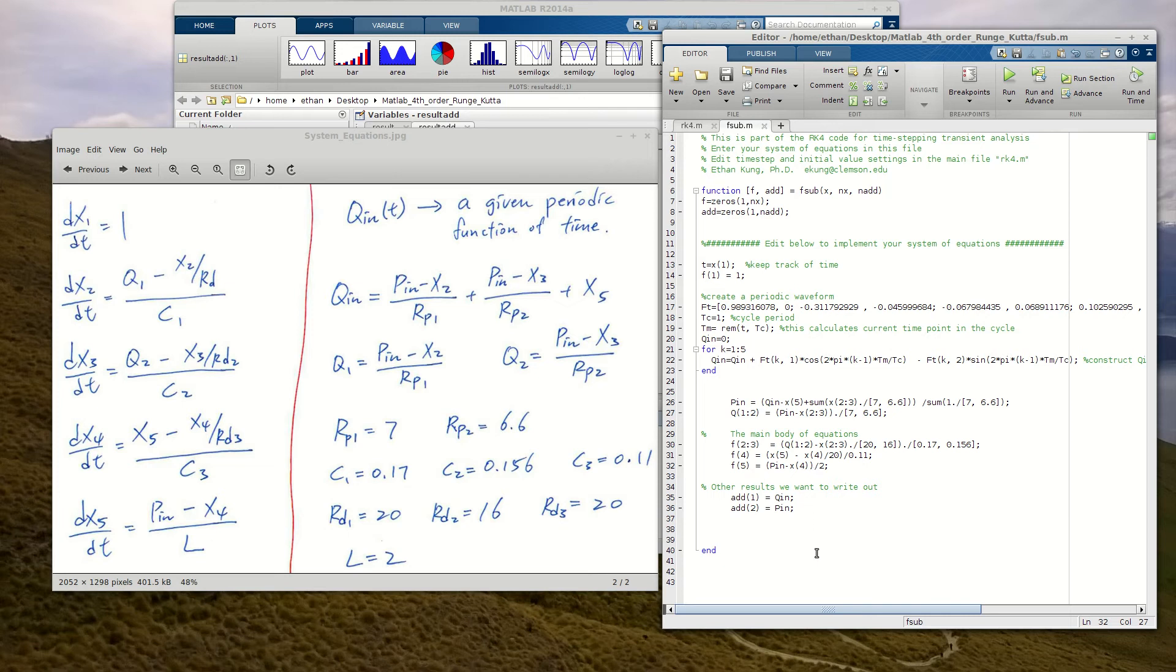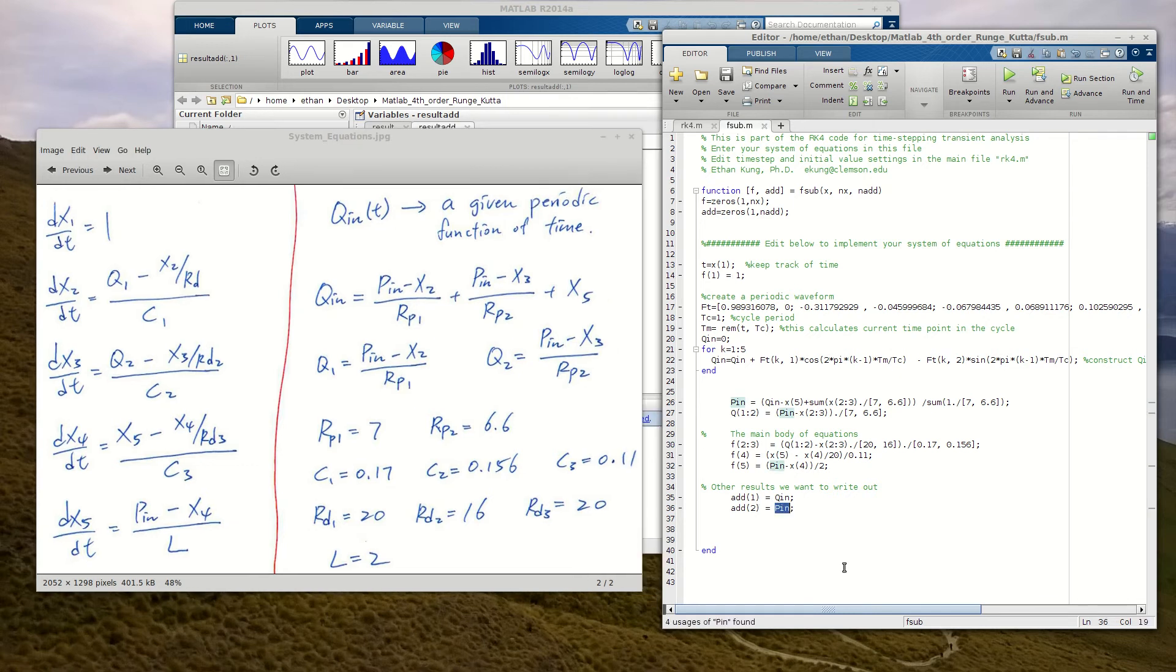And then the last thing is that, remember, in this particular case, we said we wanted to keep track of two additional variables. And so in this case, I want to write out what this qin actually is that I calculated, and I want to write out pin. Once you finish with that, you save this file.